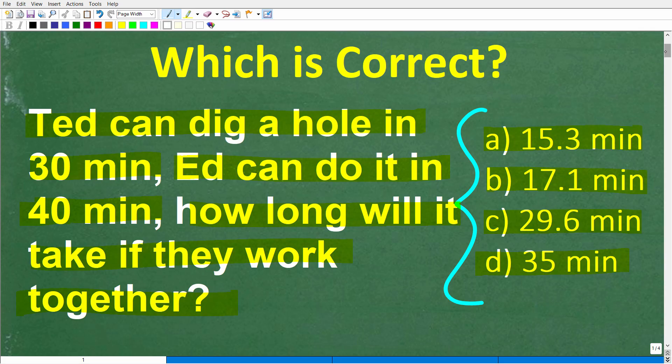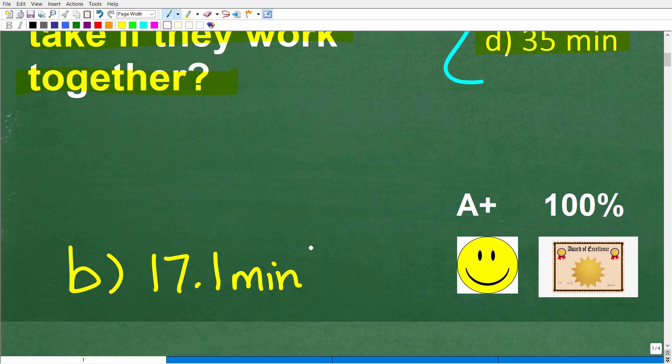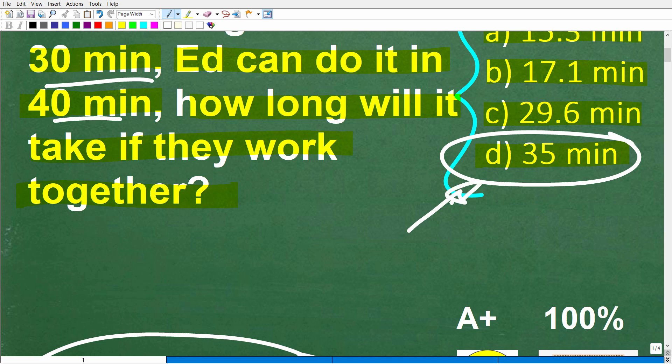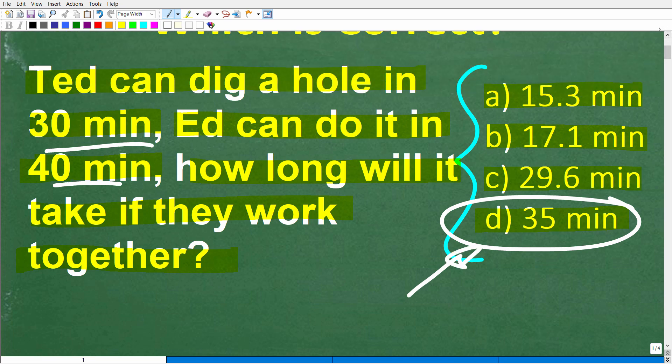Let's take a look at the answer. The correct answer is B, 17.1 minutes. Now, some of you might have been thinking, I'm just going to go ahead and average these 30 and 40 minutes. If I average these together, the average of those two numbers is 35 minutes.